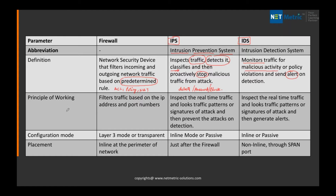Let's talk about the principle of working. The firewall filters the traffic on the basis of source IP, destination IP, source port and destination port, and then it builds a connection table to make that firewall a stateful firewall. IPS inspects real-time traffic and looks for the pattern or the signature of an attack, doing deep packet inspection and preventing attacks on detection.